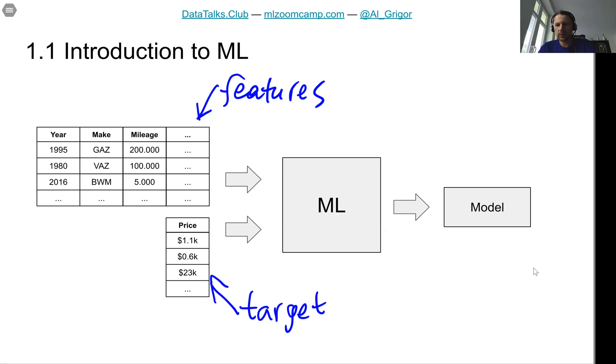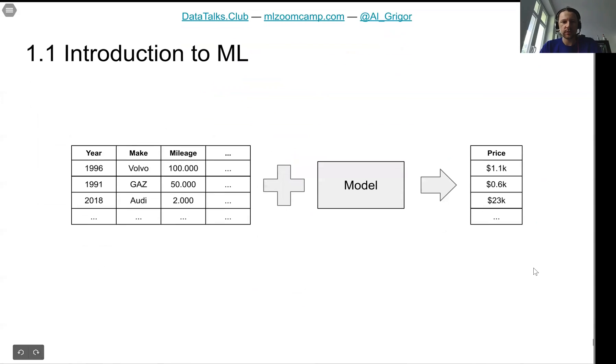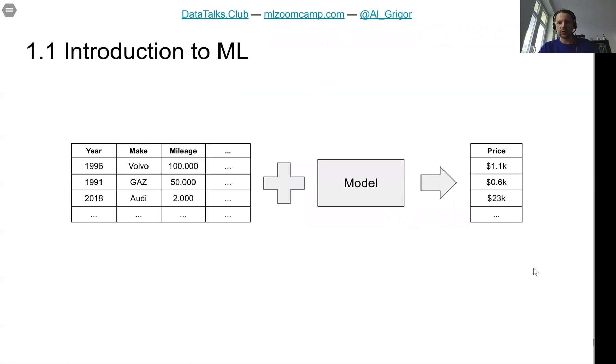These things go to a machine learning algorithm and the output is a model. The model is something we can use later to predict the prices for cars for which we don't know the price. If there are some cars, let's say for this Audi we don't know what the price is, we put it inside a model and the model tells us that the price for this car is $23,000.